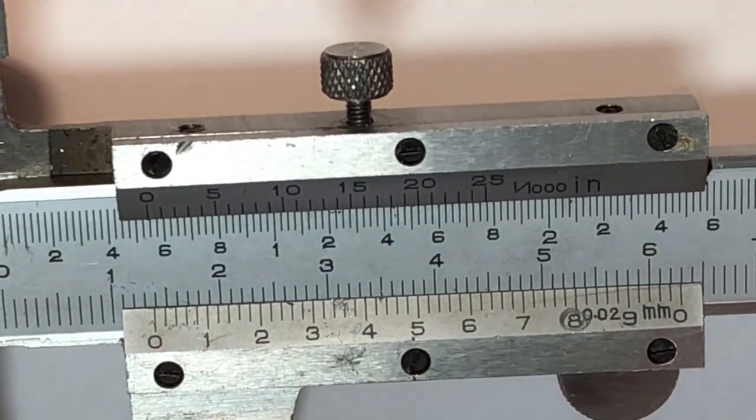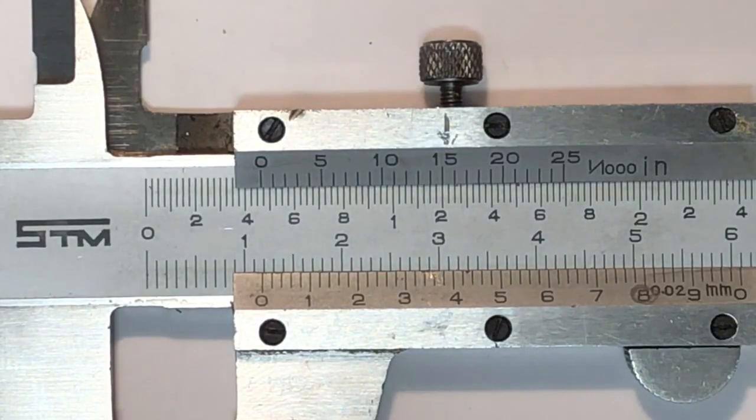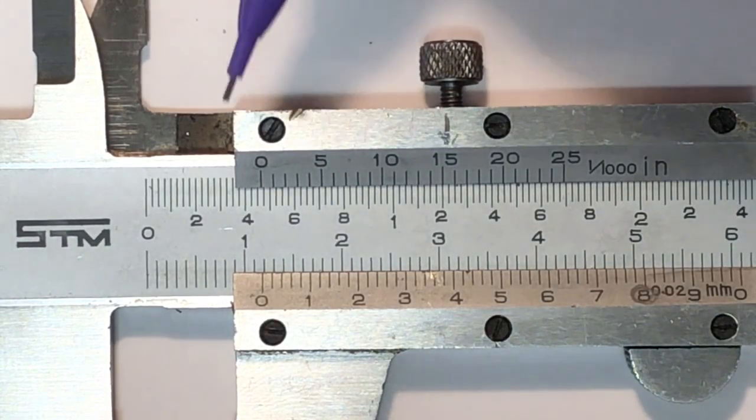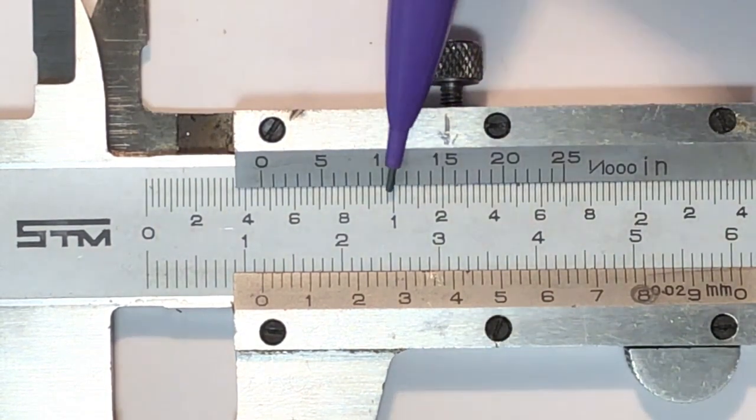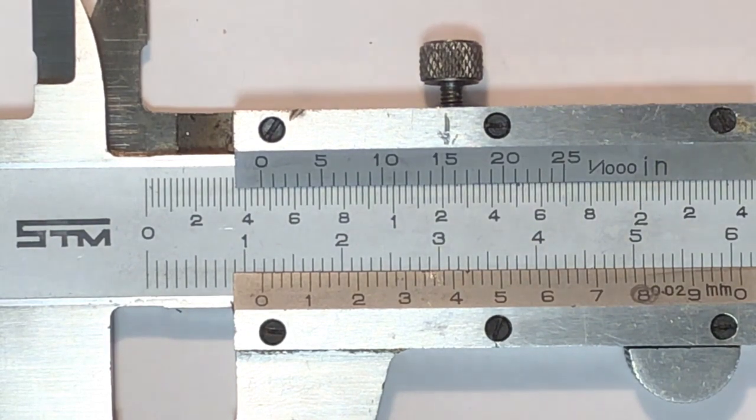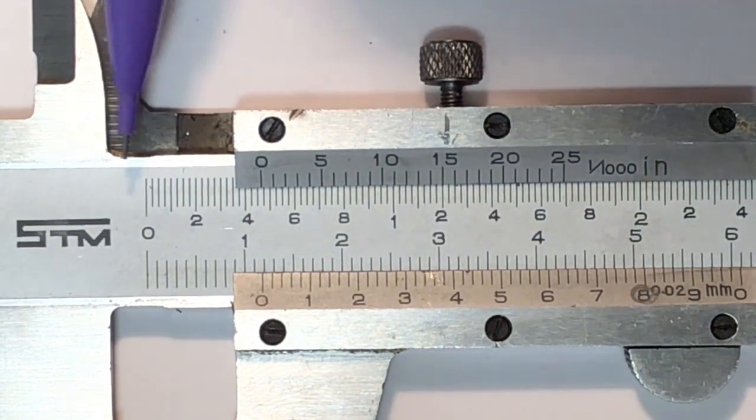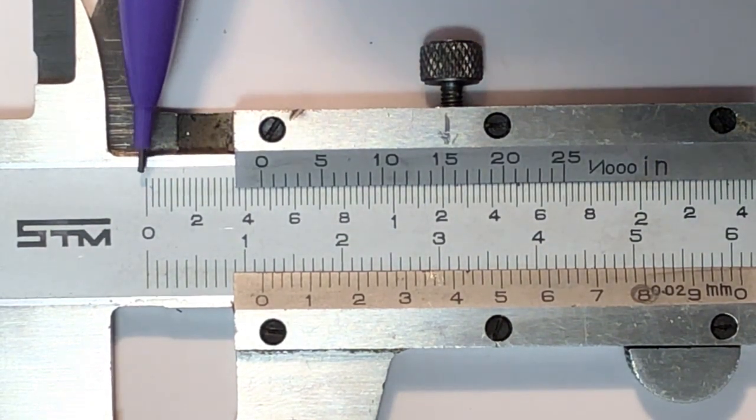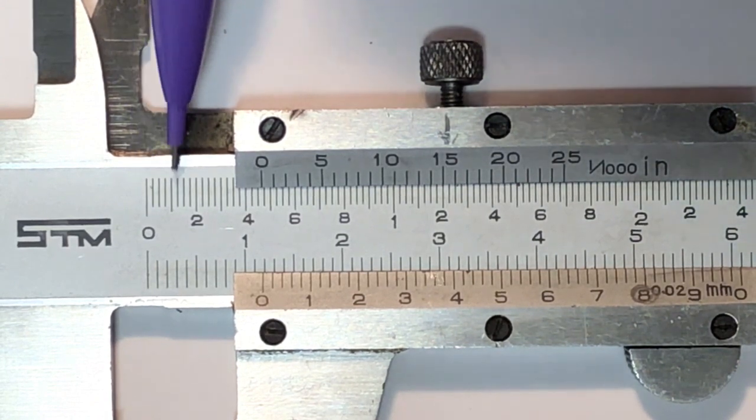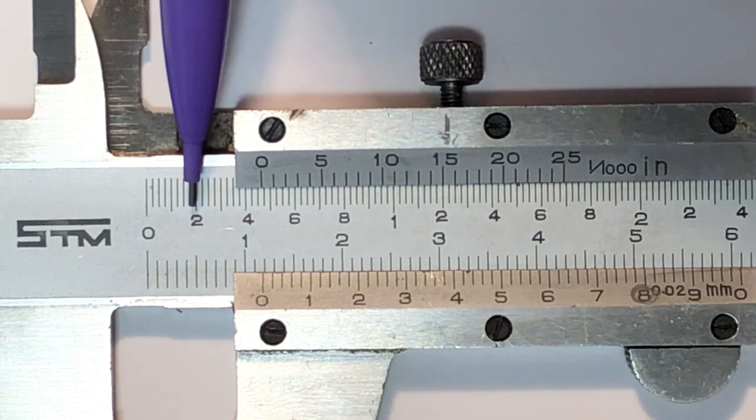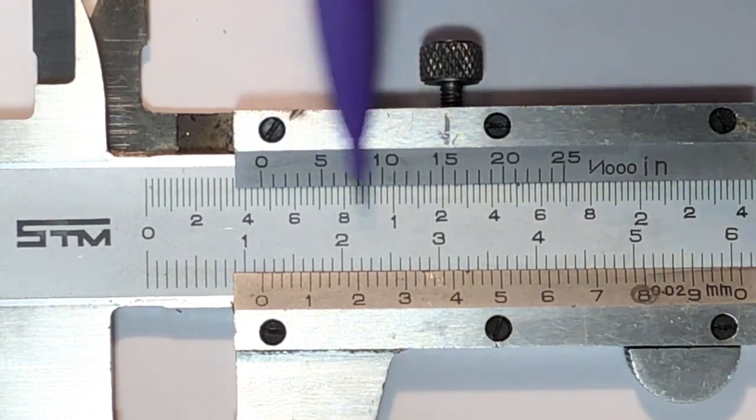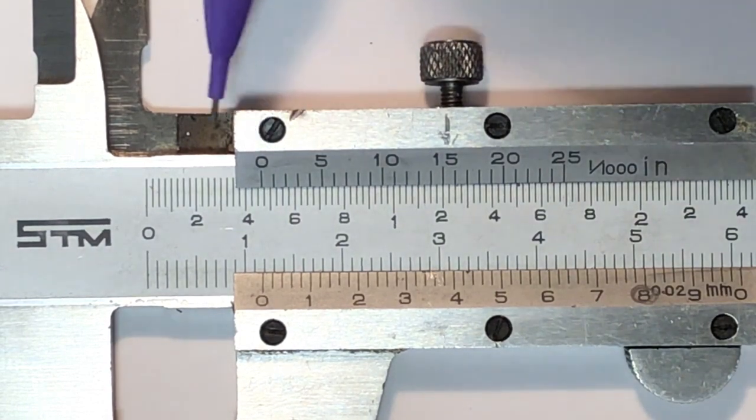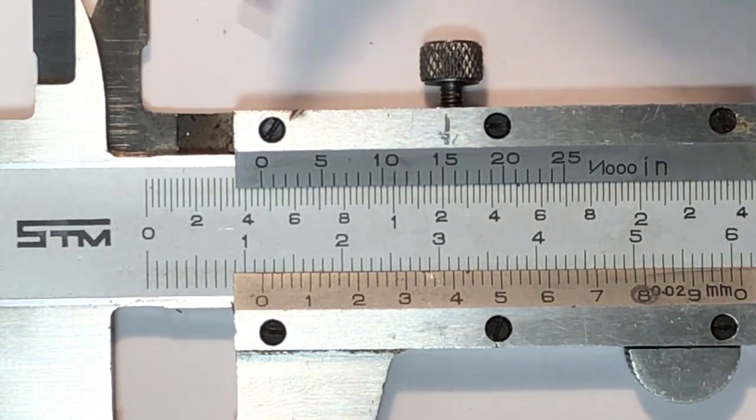Let's take a look at the imperial side now. What we have here is zero, we have one inch, we have two inches and then beyond. Let's take a look at the smaller scale. We have zero, the larger line sticking out would be a hundred thou, two hundred thou, that would be three hundred thou, four hundred thou, five, six, all the way up again.